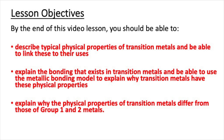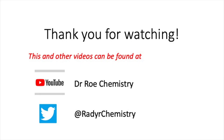That concludes this video lesson. After watching this video you should now be able to describe typical physical properties of transition metals and link these to their uses, explain the bonding that exists in transition metals, use the metallic bonding model to explain why transition metals have these physical properties, and explain why the physical properties of transition metals differ from those of group one and two metals. Please check out our YouTube channel Dr. Rowe Chemistry, which has lots of GCSE, AS and A-level videos, and our Twitter site at Radachemistry.